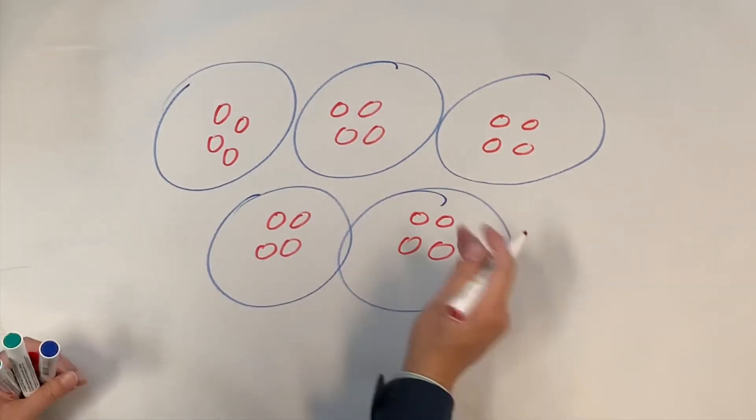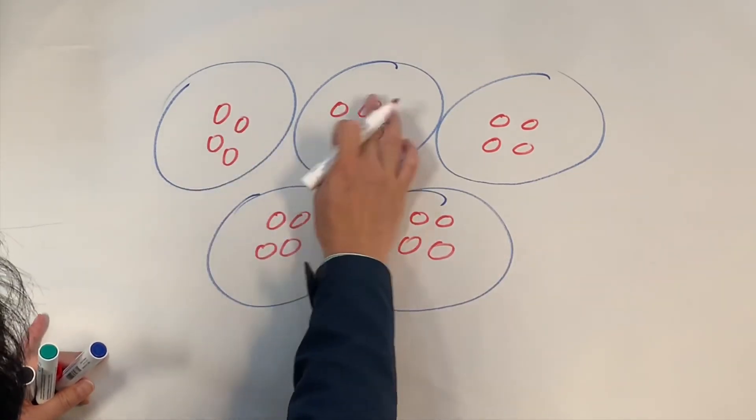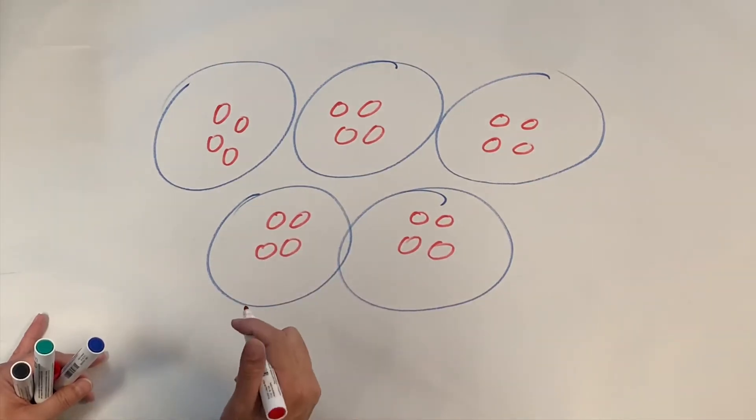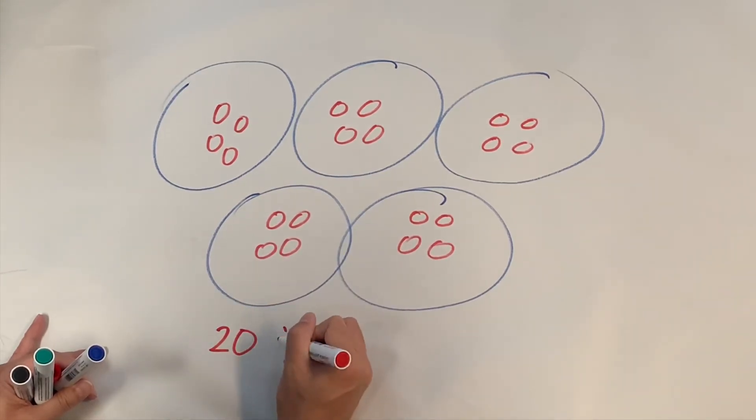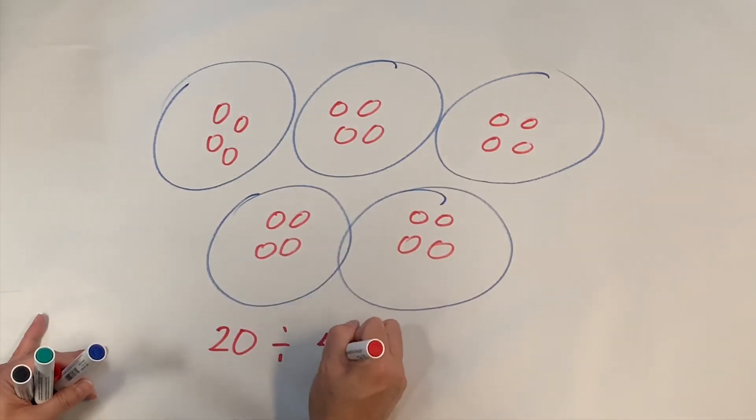Now when I look at it, I have four in each bag. I have five bags. So five times four is 20. What I modeled is 20 divided by or shared by five people. Answer is four.